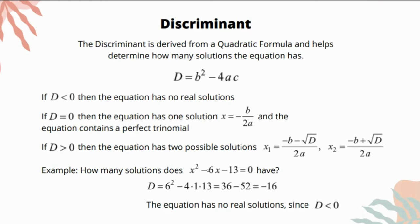How many solutions does x² - 6x - 13 = 0 have? We're checking the values. We see that the discriminant turns out to be a negative number and the equation has no solutions. We don't have to continue solving it.